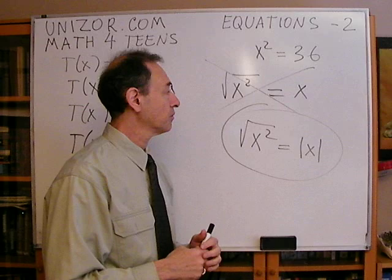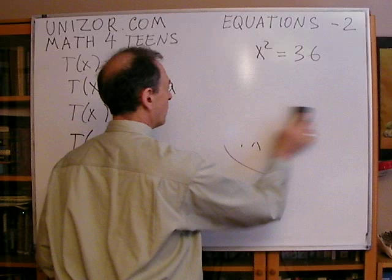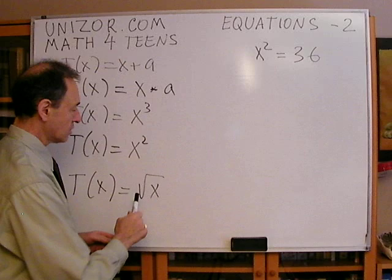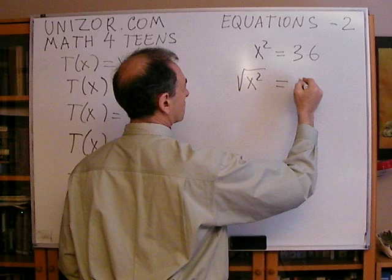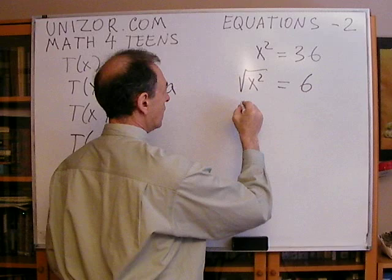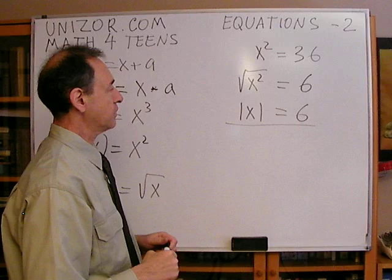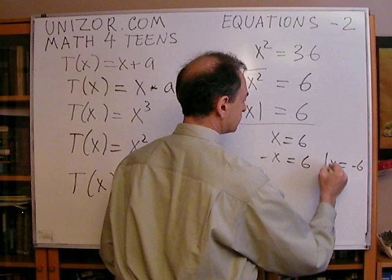If x equals minus 6, then x squared is 36, the arithmetic square root of 36 is 6, and the absolute value of minus 6 is also 6. So the correct equation is square root of x squared equals absolute value of x — not simply x. Using this correctly: applying the square root transformation to x squared equals 36 gives absolute value of x equals 6. This equation has solutions x equals 6 and x equals minus 6.